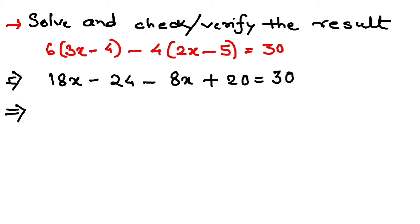So I have 18x minus 8x, that is 10x, and I have minus 24 plus 20, which is minus 4, equal to 30. So that gives me 10x equal to 30 plus 4, when it goes to the other side the sign will change.